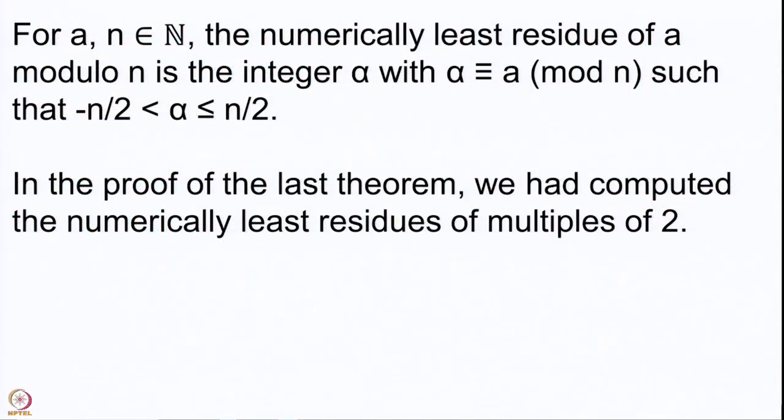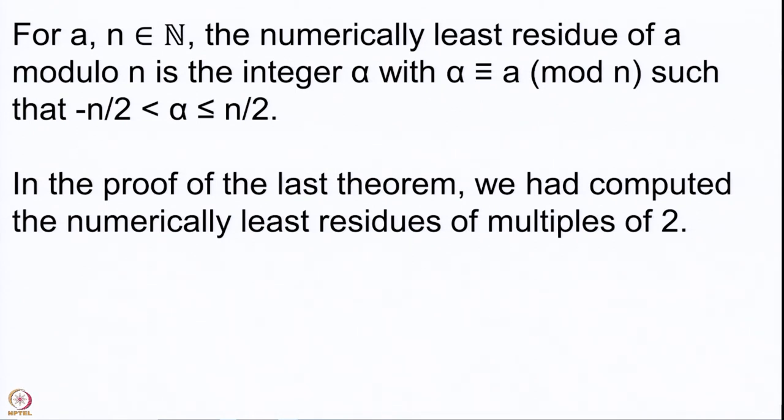Here is the definition: given a and n two natural numbers, the numerically least residue of a modulo n is the integer alpha with alpha congruent to a modulo n, satisfying minus n/2 less than alpha less than or equal to n/2. This property makes our calculations very simple. Now when I look at an odd prime p and want to compute the Legendre symbol a by p, I should be looking at multiples of a and their numerically least residues, just as we did in the proof for 2 by p.